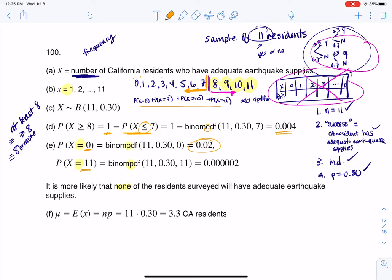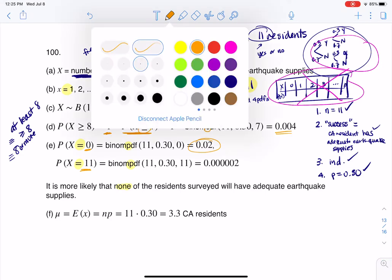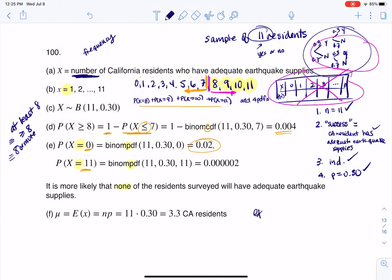And the last part says, how many residents do you expect to have adequate earthquake supplies? Well, whenever we hear expect, or really a lot of times we'll hear expected value, that's another word for mean or average. And when you're in a binomial experiment, the formula is just N times P. So I'm quite literally going to take my N, my 11 residents in my survey, and my 30% chance of success. And that just means that I expect about 3.3 to have adequate earthquake supplies. And I know that you can't have 0.3 people having adequate earthquake supplies, but that's still the numerical average.